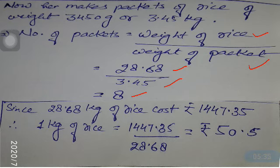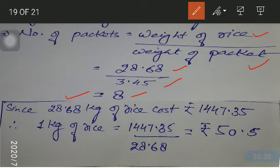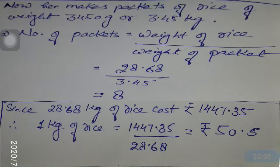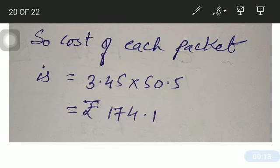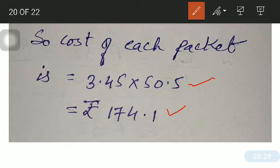We have already calculated that the total rice purchased is 28.68 kilograms and the total cost is rupees 1447.35. We can calculate the rate for one kilogram of rice by dividing the total cost by the total quantity, which comes out to rupees 50.5 per kilogram. Since each packet contains 3.45 kilograms of rice, multiplying gives us the cost of each packet: rupees 174.1.